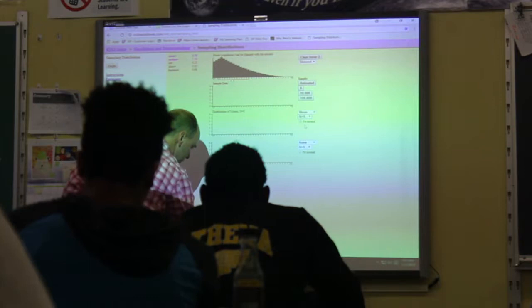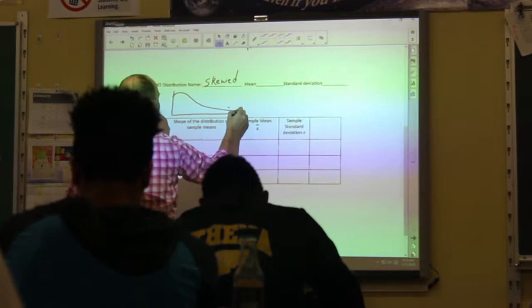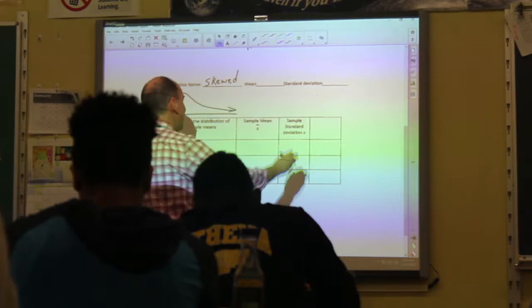So let's get this down first. The mean is 8.08 and the standard deviation is 6.22, hopefully. Yes, it is. So let's get that down. We've got a skewed distribution. Sketch it so that you can see what the heck it looks like when you're looking at this later. Boom, it's skewed. Skewed which way? Right. Good. Mean is 8.08 for our example and standard deviation is 6.22.